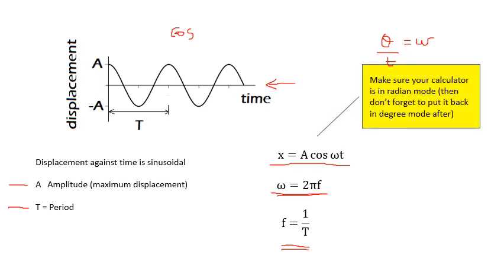When we use this equation here, make sure that your calculator will be in radian mode, because ω will be given in radians per second. So, your calculator needs to be able to handle that. And then, when you finish that question, don't forget to put it back to degrees, or you'll get some weird answers later on.